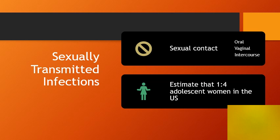Sexually transmitted infections occur through oral, vaginal, or intercourse-based sexual contact. These can include gonorrhea, chlamydia, trichomonas, herpes, and HIV. It is estimated that one in four adolescent women in the United States has one of these sexually transmitted infections.